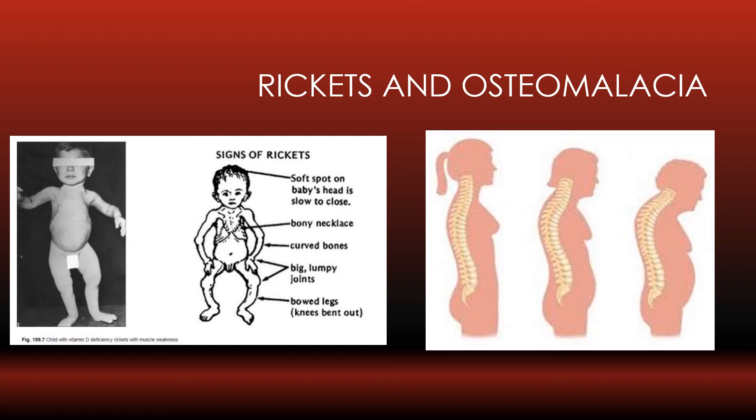Osteomalacia can hit in older age as well, which is similar to rickets. It comes down to vitamin D and calcium availability — most likely vitamin D. People are just not getting outdoors enough with current lifestyles, and bones therefore can't lay down calcium — they go soft and bend.